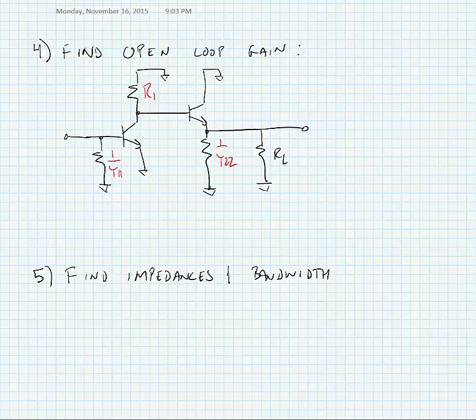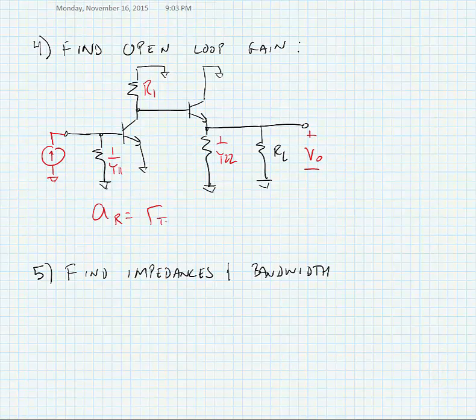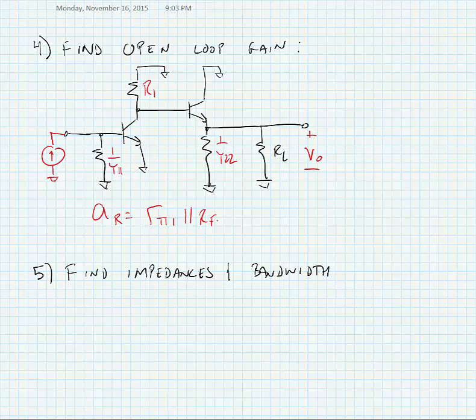If we use inspection analysis on this circuit, we would find that the total gain, we're going to call this little a sub r to denote that it should be in terms of a resistance. The total gain of this circuit, where we put a current in at the input and measure a voltage at the output, is equal to Rpi1 in parallel with RF times GM1 times RC times the gain of the output stage, which is approximately 1 since it is a common collector amplifier.